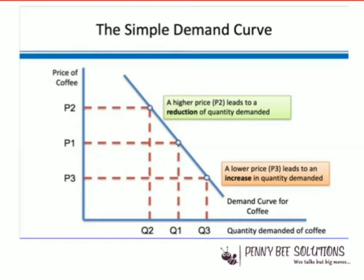Any kind of substitutes or complementary products can have a demand impact on one product. The demand curve slopes from left to right — remember that in reality it's not going to be a straight line, but we usually draw it this way for simplicity. The curve shows the quantity of the product or service that will be demanded at a given price.